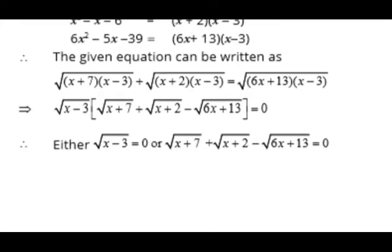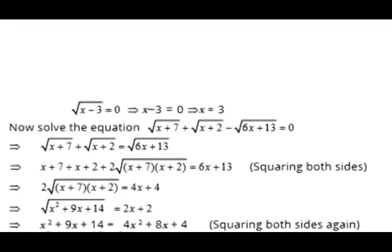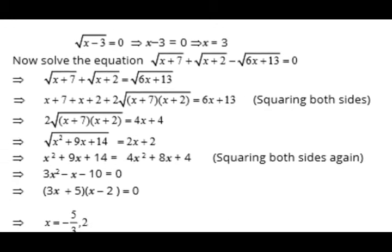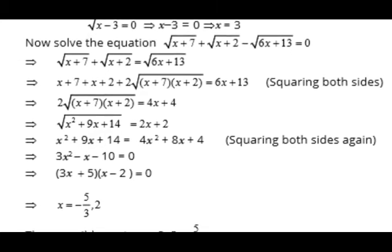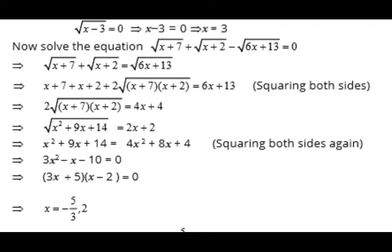We now have two equations: one is x − 3 = 0, and the other is like the previous linear-type example. We square both sides of both equations. Squaring x − 3 = 0 gives x = 3. For the second equation, we square both sides — on the left-hand side we get (a + b)² = a² + 2ab + b², and on the right-hand side we have 6x + 13. We move all values except the radical to the right-hand side and square again, removing the radical on the left and applying the square formula on the right.